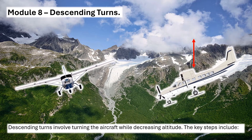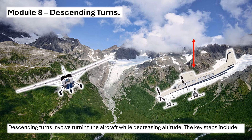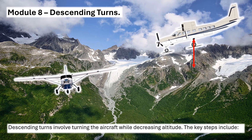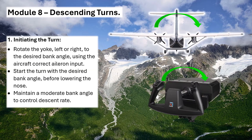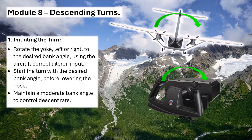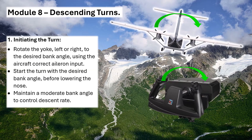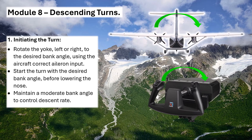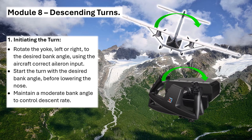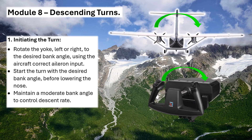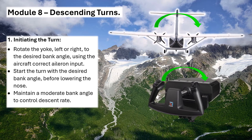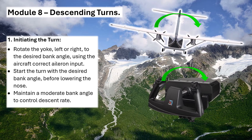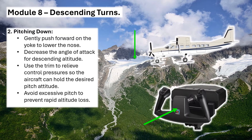Descending Turns. Descending turns involve turning the aircraft while decreasing altitude. The key steps include: 1. Initiating the turn – rotate the yoke, left or right, to the desired bank angle using the correct aileron input. Start the turn with the desired bank angle before lowering the nose. Maintain a moderate bank angle to control descent rate.